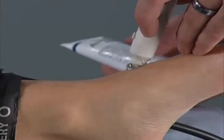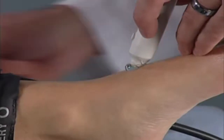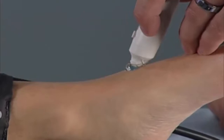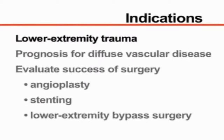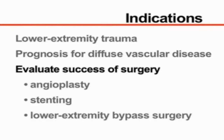In addition, the ankle brachial index is indicated in the evaluation of vascular compromise in patients with lower extremity trauma. It may also be useful to estimate prognosis in patients with diffuse vascular disease and to evaluate the success of an interventional or surgical procedure, such as angioplasty, stenting, or lower extremity bypass surgery.